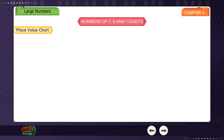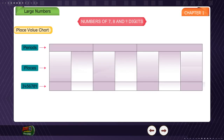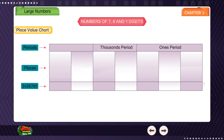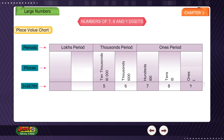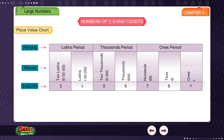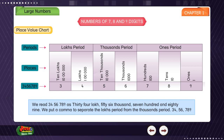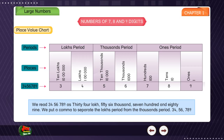Place Value Chart for 7-digit numbers. Periods and places 3 through 9: 1s Period and Lakhs Period. The digits are placed as: 9 in 1s, 8 in 10s, 7 in 100s, 6 in 1000s, 5 in 10,000s, 4 in Lakhs, 3 in 10 Lakhs. We read 3,4,5,6,7,8,9 as 34,56,789. We put a comma to separate the Lakhs period from the thousands period: 34,56,789.